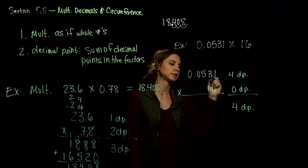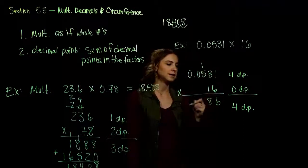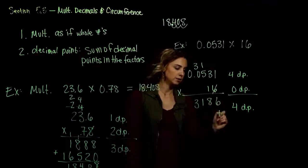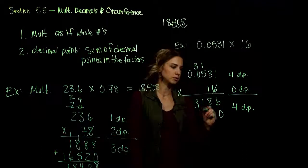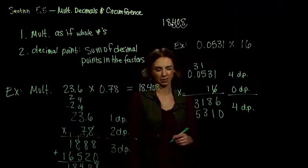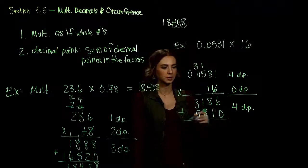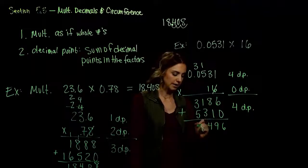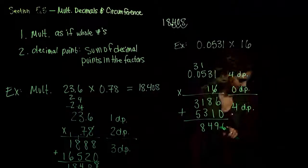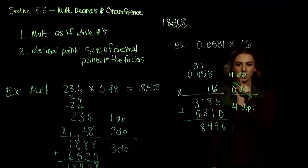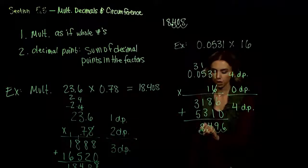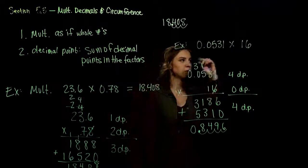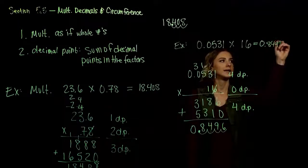Six times 1 is 6. Six times 3 is 18. Six times 5 is 30, plus another 1, that's 31. Six times 0 is 0, plus 3, we get 3. Now for 1: 1 times 1 is 1, 1 times 3 is 3, 1 times 5 is 5, 1 times 0 is 0. Adding down: 6 and 0 is 6; 8 and 1 is 9; 1 and 3 is 4; 5 and 3 is 8. We have to move in four decimal places, so we get 0.8496.